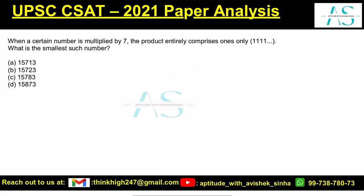A certain number is multiplied by 7, and the certain number is something that is coming from it. The product will come. So, number into 7, the product will always be 1111.